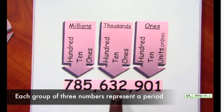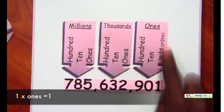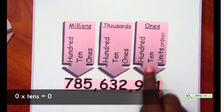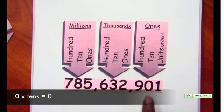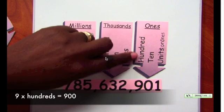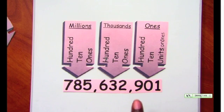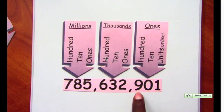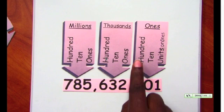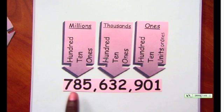These numbers represent each period. Looking at the digit 1 in the ones period, it is in the ones place — 1 times 1. The digit 0 is in the tens place; 0 times 10 is 0. The digit 9 is in the hundreds place; 9 times 100 gives us 900. So 9 represents 900, not just 9, because it is in the hundreds place.